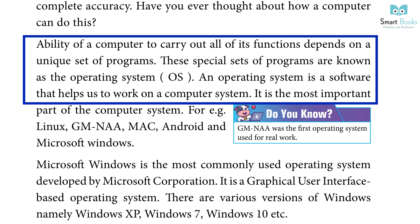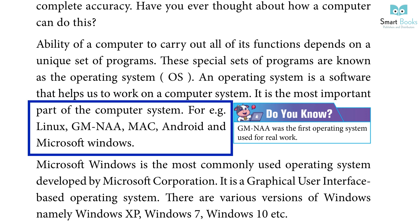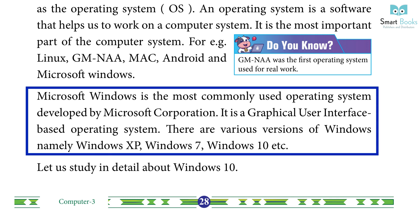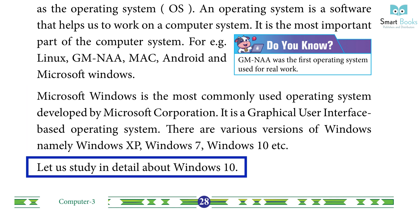An operating system is a software that helps us to work on a computer system. It is the most important part of the computer system. Examples include Linux, GNOME, Mac, Android, and Microsoft Windows. Microsoft Windows is the most commonly used operating system, developed by Microsoft Corporation. It is a graphical user interface-based operating system. There are various versions of Windows: Windows XP, Windows 7, Windows 10, etc.